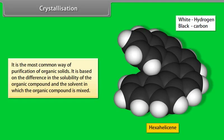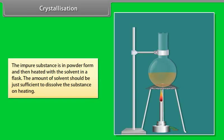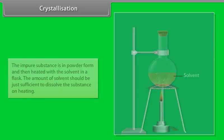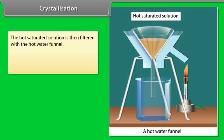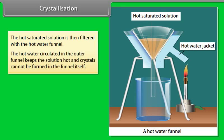Crystallization: it is the most common way of purification of organic solids. It is based on the difference in the solubility of the organic compound in the solvent. The impure substance is in powder form and then heated with the solvent in a flask. The amount of solvent should be just sufficient to dissolve the substance on heating.